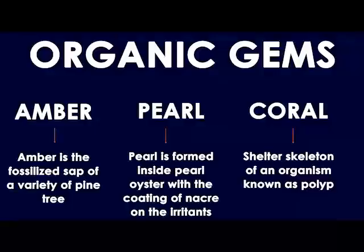In the last session we discussed organic gems as well as inorganic gems. Now let us see where these gems are formed and how they are formed. Organic gems are formed within living organisms — for example, pearl, which is formed in the pearl oyster, and then coral.